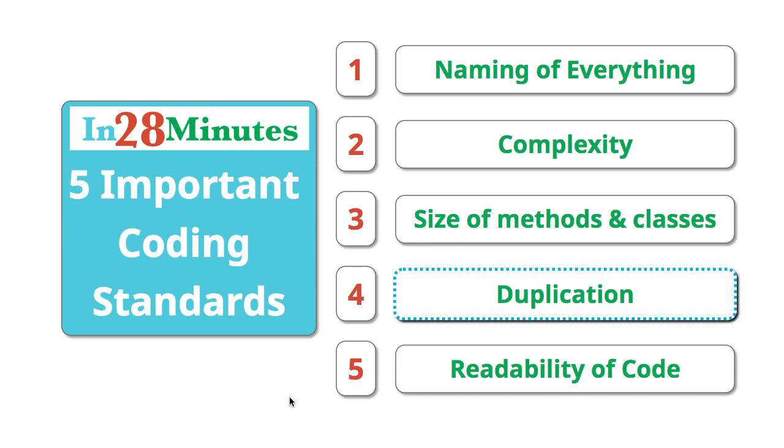The fourth important thing is duplication. You should have as minimum duplication as possible in your code. Typically the standard we use is like 5%.